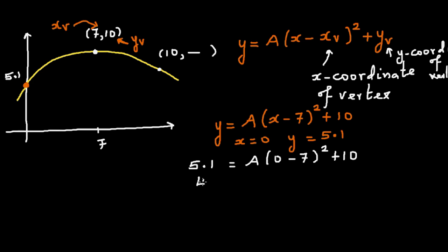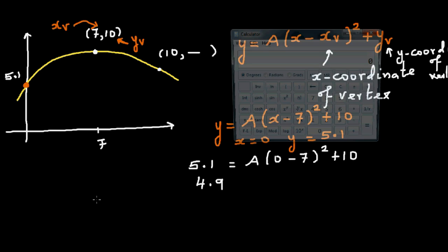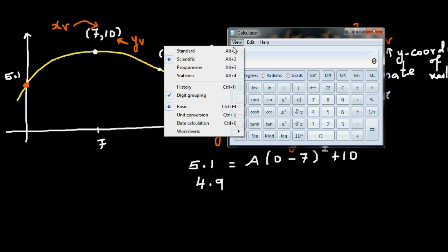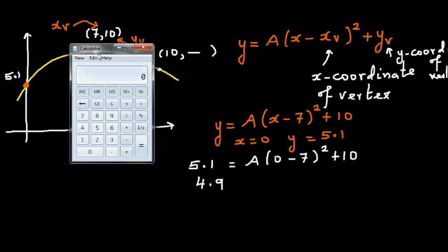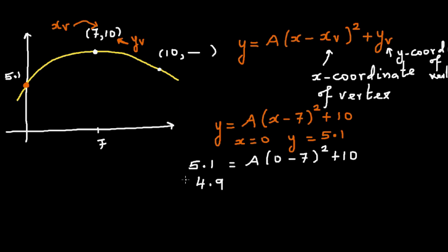Okay so if you take away 10 from both sides, 5 take away 10 is 4.9, am I right? So let me get my calculator, let me make it standard.